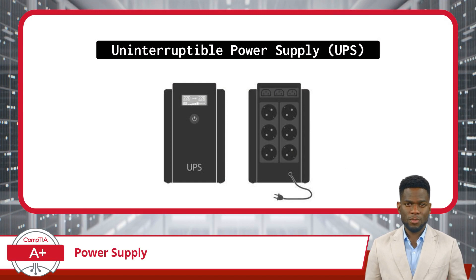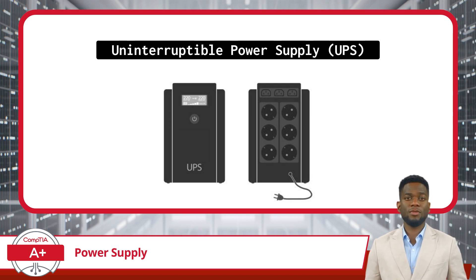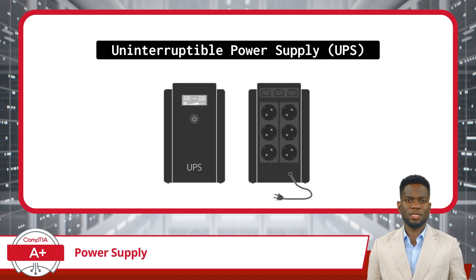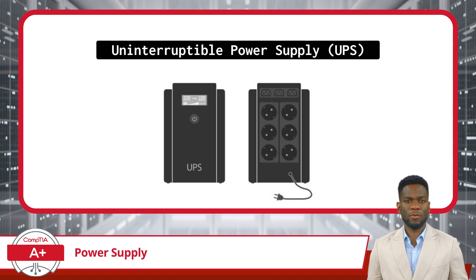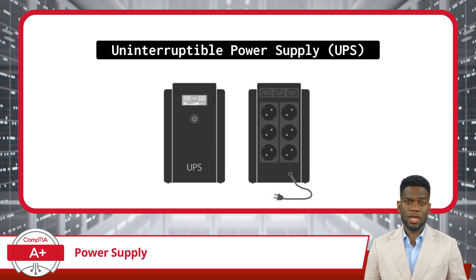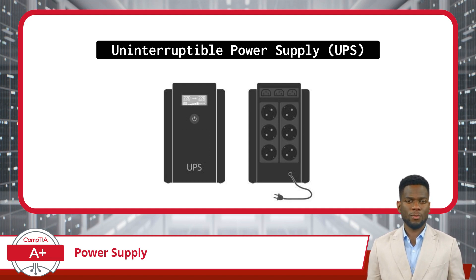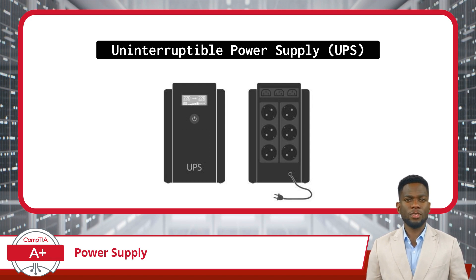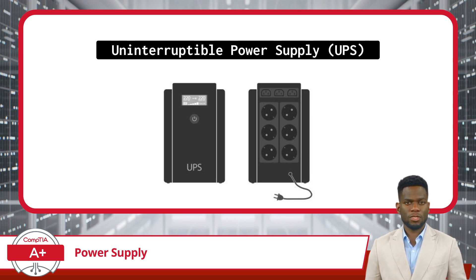Lastly, in situations where there are sudden and unexpected power interruptions, an uninterruptible power supply, or UPS, becomes an invaluable asset to ensure maximum uptime. A UPS is a device designed to provide immediate and uninterrupted emergency power to connected equipment when the main power source is lost. This seamless transition is especially important in IT environments where servers are constantly processing and transmitting data, as even a momentary power disruption can lead to unsaved data being lost or systems shutting down improperly. When there's a sudden loss of power, the UPS instantly kicks in, allowing IT professionals time to either switch to a longer-term power solution like a generator, or to safely shut down systems and save critical data.